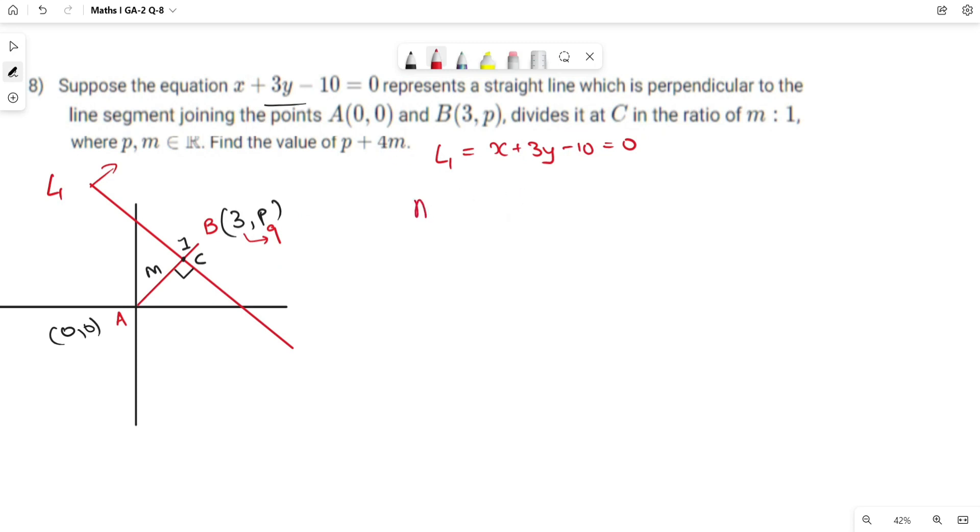We note that m1 times m2 equals minus 1 when line 1 is perpendicular to line 2. So here, first of all, slope of L1 equals minus 1 by 3. So minus 1 by 3 times slope of AB equals minus 1, which implies m_AB equals 3.